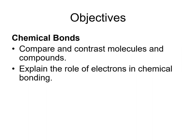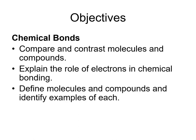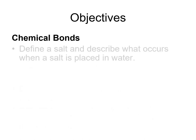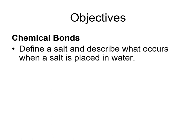The learning objectives of this screencast are as follows: compare and contrast molecules and compounds; explain the role of electrons in chemical bonding; define molecules and compounds and identify examples of each; explain each of the following bonds: ionic, nonpolar covalent, polar covalent, and hydrogen bonds; and finally, define a salt and describe what occurs when a salt is placed in water.